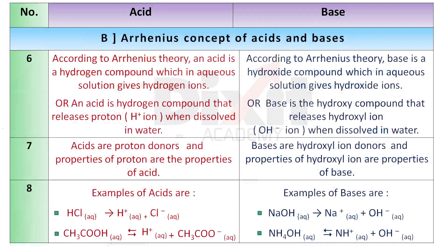Let's discuss Arrhenius' concept of acids and bases. According to Arrhenius' theory, an acid is a hydrogen compound which in aqueous solution gives hydrogen ions. Or, an acid is a hydrogen compound that releases a proton, that is H+ ion, when dissolved in water. Acids are proton donors, and the properties of the proton are the properties of the acid.